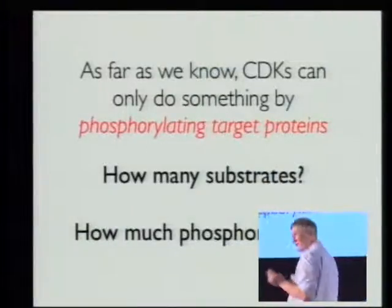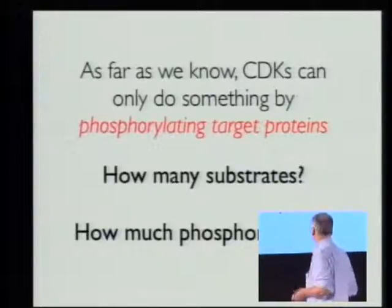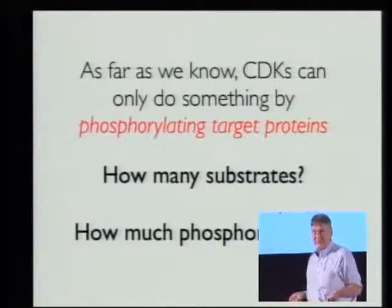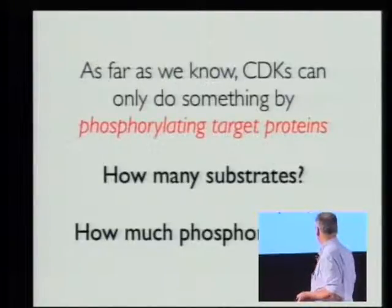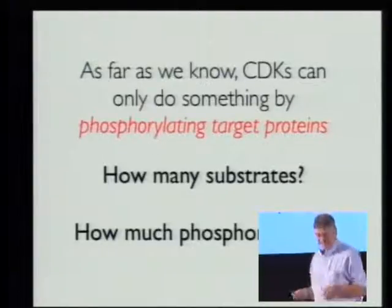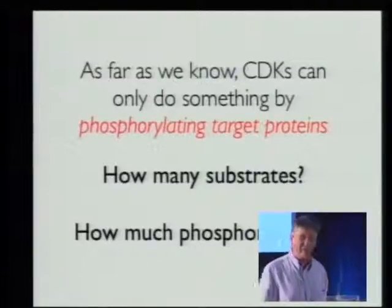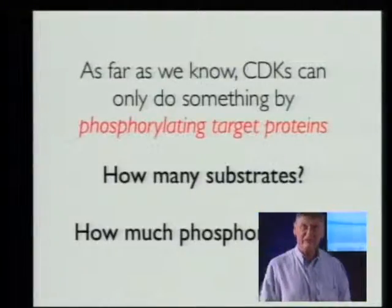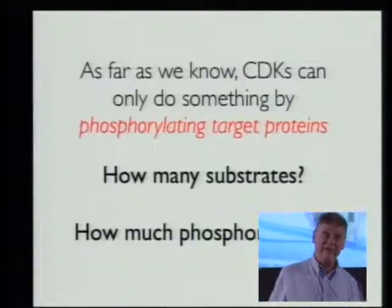This thing is a protein kinase — no question about that. And it phosphorylates, for example, histone H1 and lots of other things. And the question is, protein kinases work by phosphorylating things. So the question is, how many proteins do you have to phosphorylate, and how much, in order to get a cell to enter mitosis?